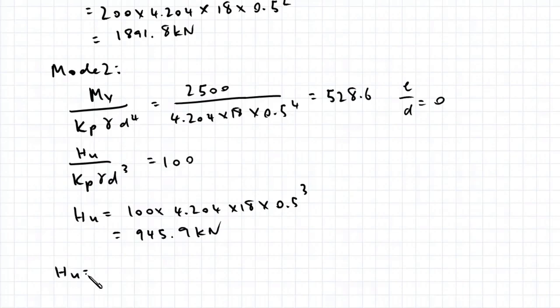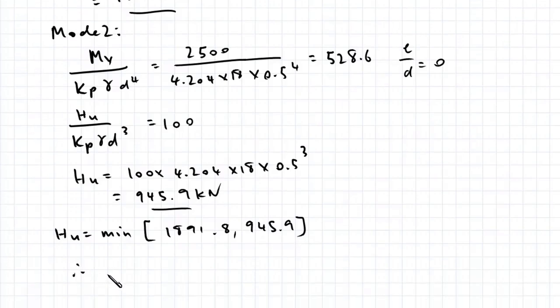Our horizontal capacity is equal to the minimum of these two values: 1891.8 and 945.9. Therefore, the horizontal capacity of our pile is 945.9 kN.